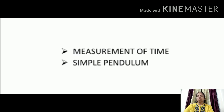If you have any doubt, you have to try to clear it. Otherwise you may have problems with the next topics. In the last class we studied that we can determine the speed of an object if we can measure the time taken by it to cover a certain distance.